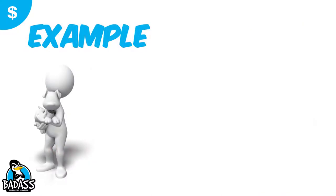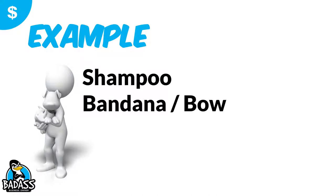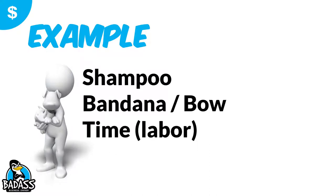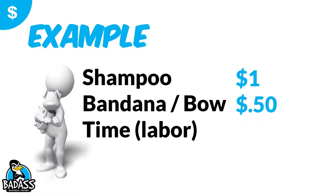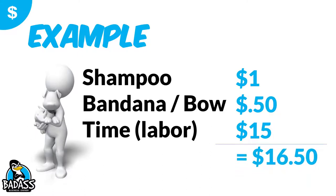Let's take the example of a dog grooming business. Your cost of goods will include shampoo — set aside $1 for the amount used on that particular dog — a bandana or bow at about $0.50, and labor hours. If it takes you one hour to groom the dog at $15 per hour, your total cost of goods is $16.50. Notice we only count what's truly used in providing the service.